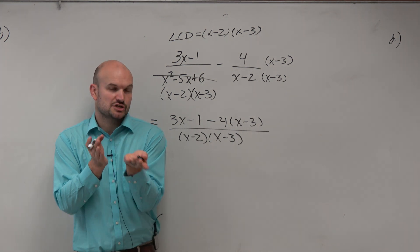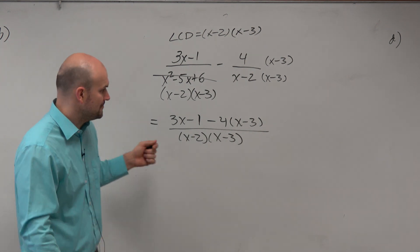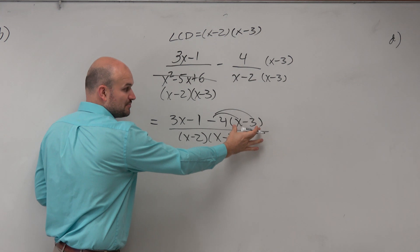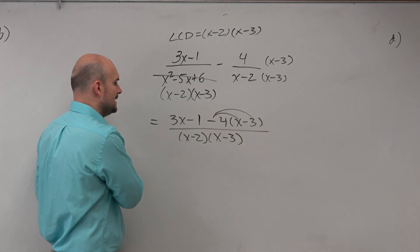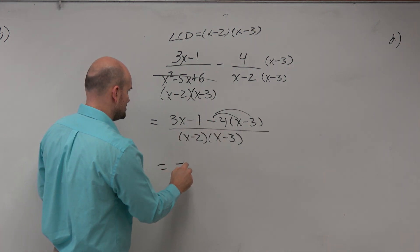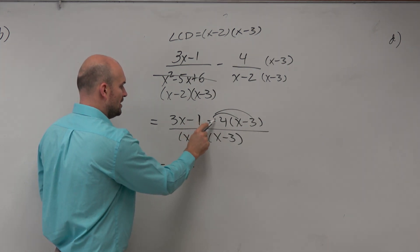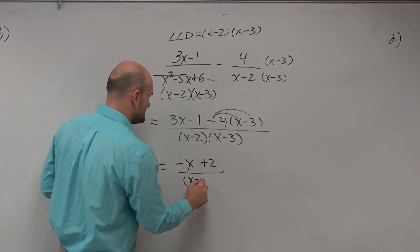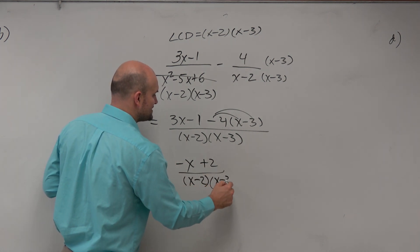Yes. I could show an extra step, but it just takes more time. It's more writing. So then, just make sure you apply distributive property. Again, notice how I use parentheses here. And then I'm just going to combine in my head. 3x minus 4x is going to be negative x. Negative 1 plus 3 is going to be positive 2. All over my common denominator, x minus 2 and x minus 3.